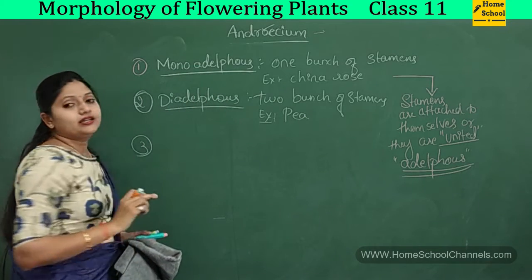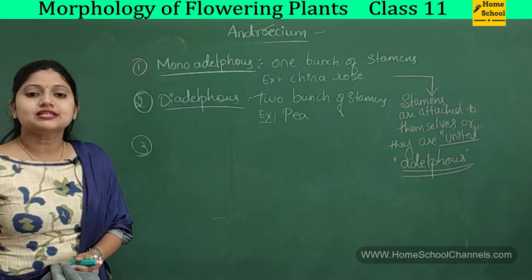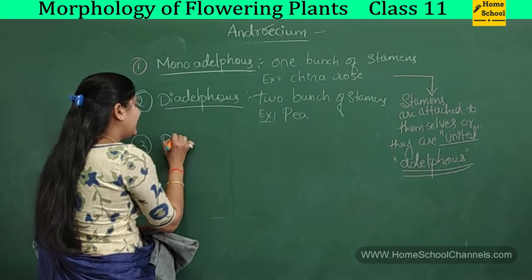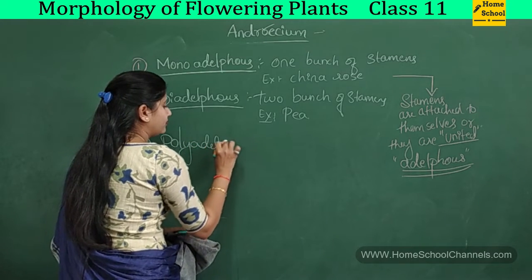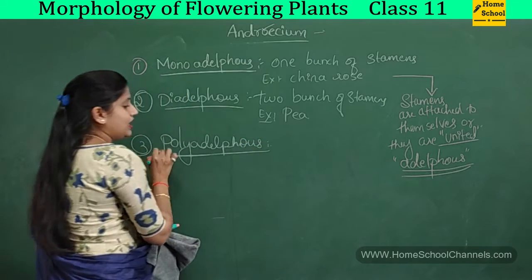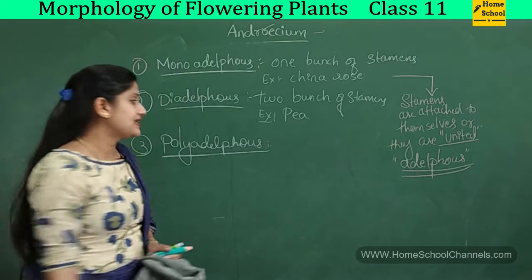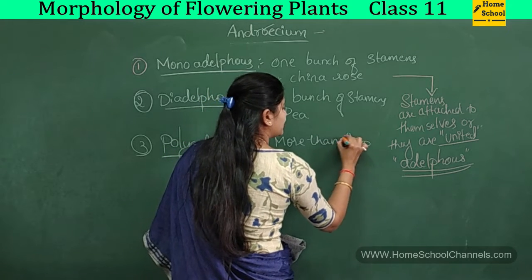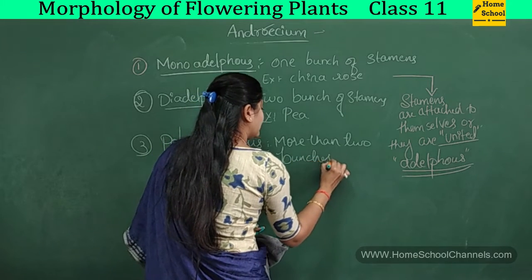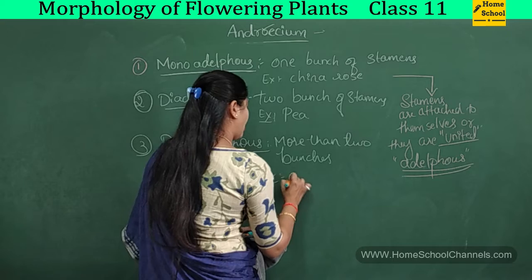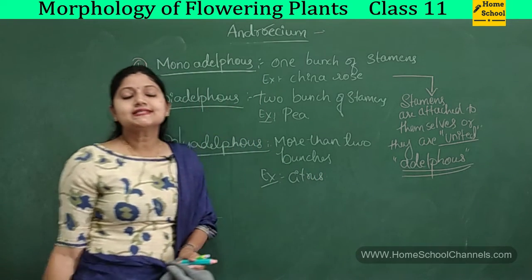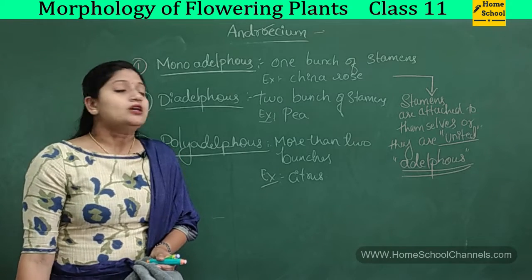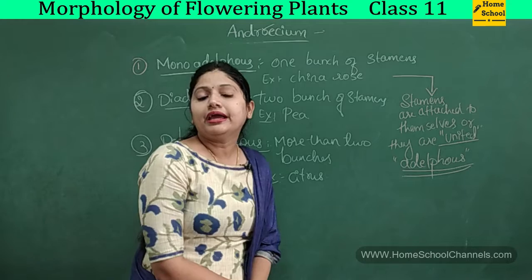If there is one bunch it is monadelphous, if two bunches it is diadelphous, and if more than two bunches of stamens are present, it is called the polyadelphous condition. An example of polyadelphous condition is all citrus plants.